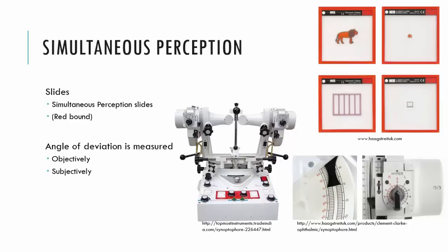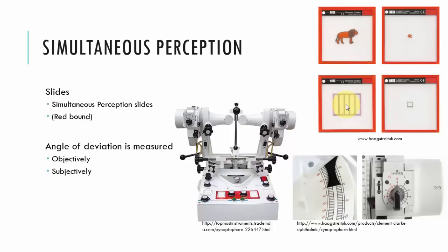Should your patient have a vertical deviation, just as with the horizontal, you will move this vertical deviation control until you see no movement of the eye. Subjectively, you will move this for the patient and ask them when the lion is in the cage. In terms of the slides, subjectively the patient should have the lion in the centre of the cage. If the lion is too high or too low, then you have a vertical deviation. With the simultaneous perception slides, you need to ask your patient about the position of the lion in relation to the cage and determine if there is horizontal separation as well as vertical separation.